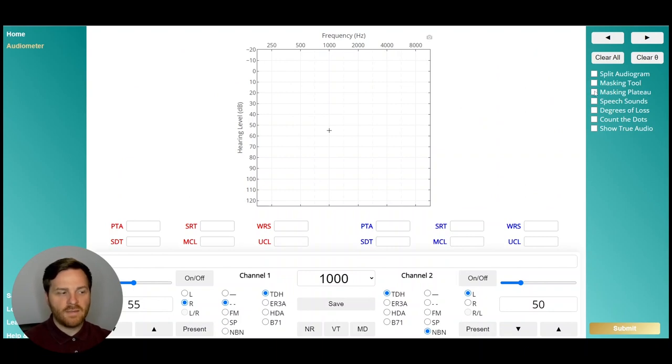The masking tool and the masking plateau are just different ways to help you understand masking. They're great educational tools, and we have a whole video that introduces those tools that I recommend you check out. Here you can also see the speech sounds overlaid on the audiogram as you do your testing, and you can see the degrees of loss as well. In addition, we have a count the dots feature that puts the count the dots audiogram onto the screen so you can get an estimate of the articulation index.